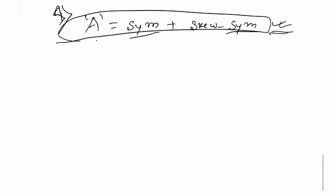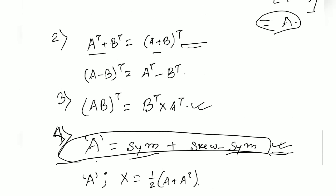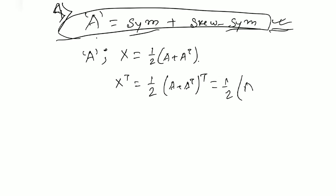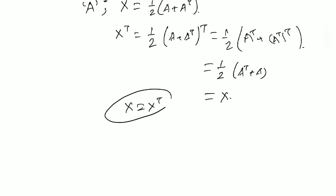Let's prove this with an example. For a square matrix A, define X = ½(A + A^T). Then X^T = ½(A + A^T)^T = ½(A^T + (A^T)^T) = ½(A^T + A) = X. Since X^T = X, the matrix X is symmetric.